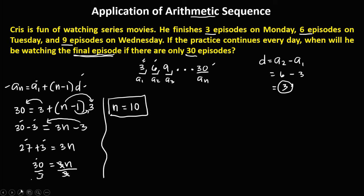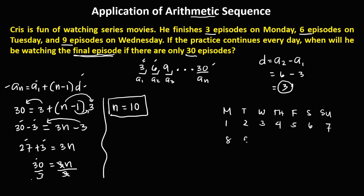To find what day he will be watching the final episode: Monday is day one, Tuesday is day two, Wednesday is day three, Thursday is four, Friday is five, Saturday is six, Sunday is seven, back to Monday is eight, Tuesday is nine, and Wednesday is ten. Therefore, he will be watching the final episode on Wednesday.